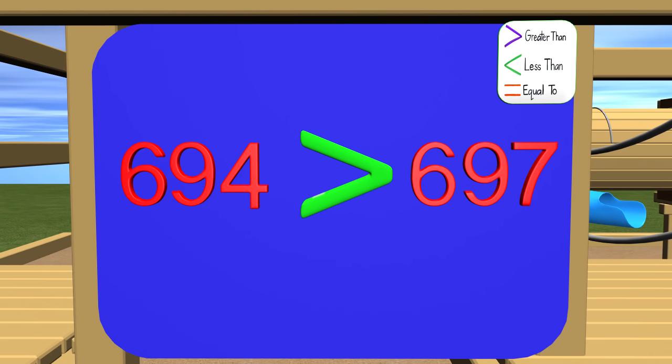Now we need to face the mouth towards the greater number, which is 697. Now, can you guys read this statement for me? Correct! 694 is less than 697. Great job again!